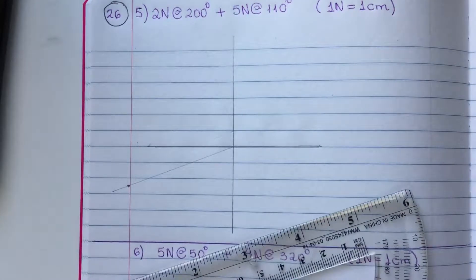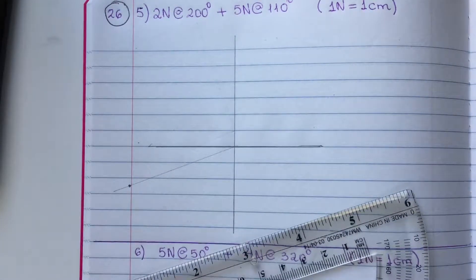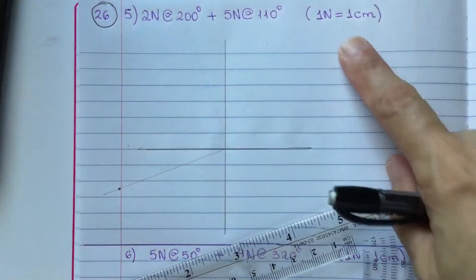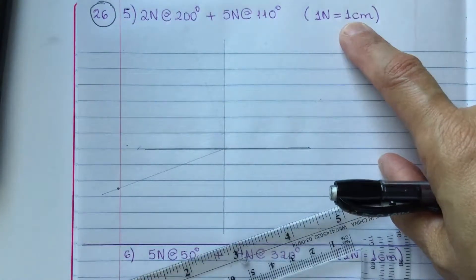Now, let's find how to draw two newtons on the grid. So, here is showing that one newton is, for a scale purpose, is one centimeter.